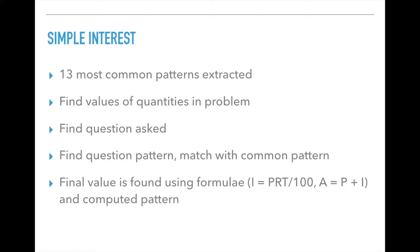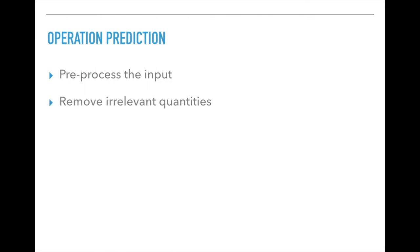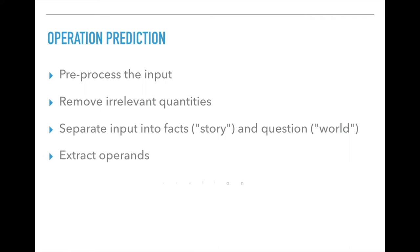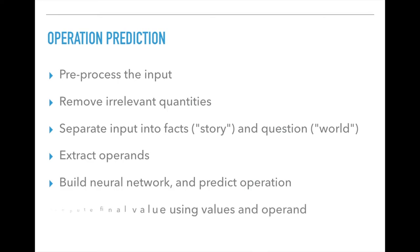The next category is operation prediction. We first pre-processed the question using Keras. The question was then removed of any irrelevant quantities. We then separated the question into two parts. One containing the facts or the story and one containing the question or the world state. We then extracted the quantities and built a neural network that predicts the operation and then the final solution is computed.